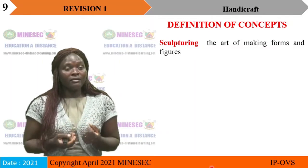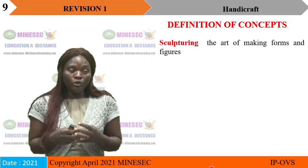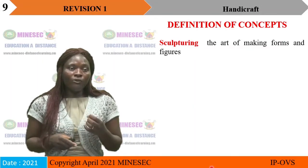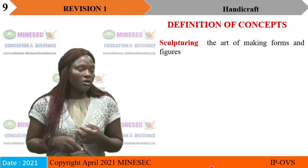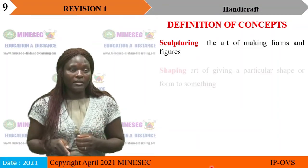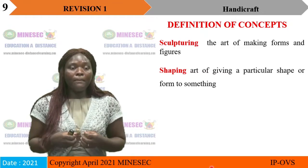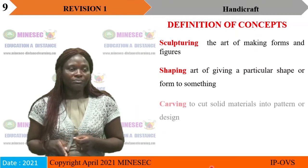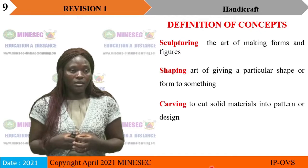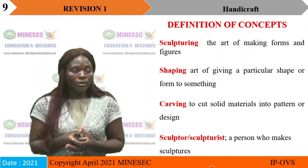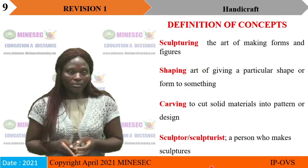Before we continue with the revision, let's do a summary of all what you have been doing in manual labour. First, the definition of concepts. Sculpturing is the art of making forms and figures. Shaping is the art of giving a particular shape or form to something. Carving means to cut solid materials into patterns or designs. A sculptor or sculpturist is that person who makes sculptures.